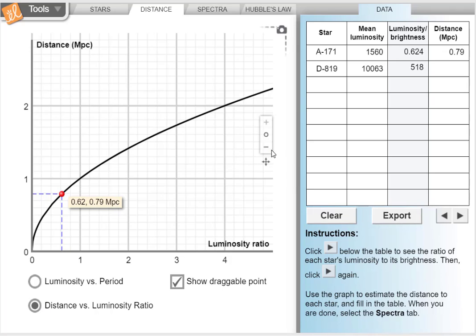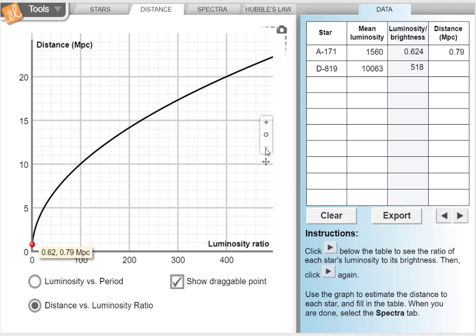So using the distance versus luminosity graph, we can zoom out to get bigger numbers and we can go all the way to 518 or as close as we can and see that that's at least 22.2 parsecs away.